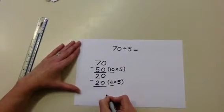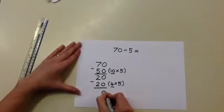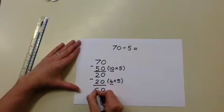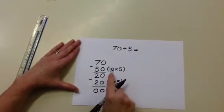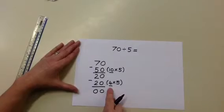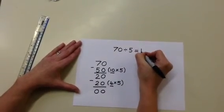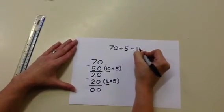20 subtract 20 is 0. Now we look back in the brackets. We have taken away 10 groups of 5 and 4 groups of 5. 10 add 4 is 14. So 70 divided by 5 is 14.